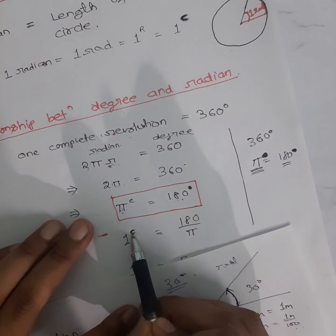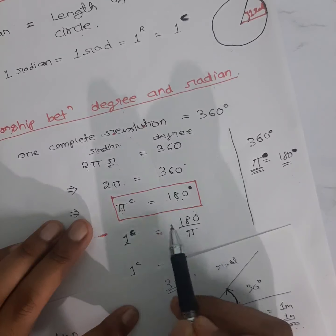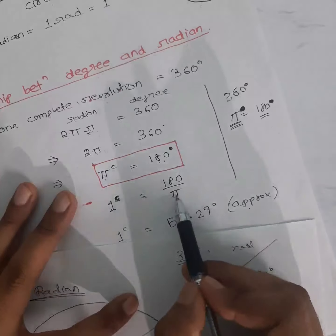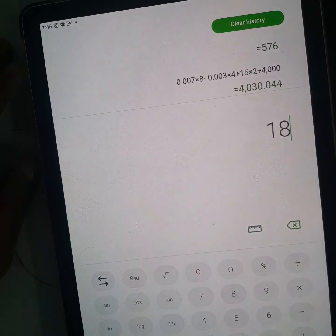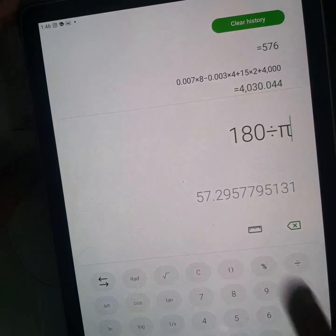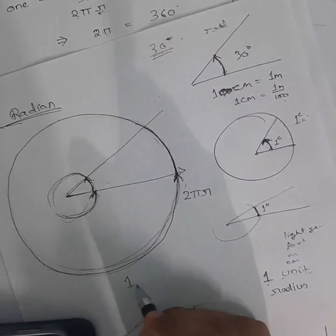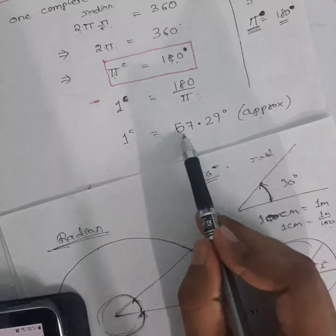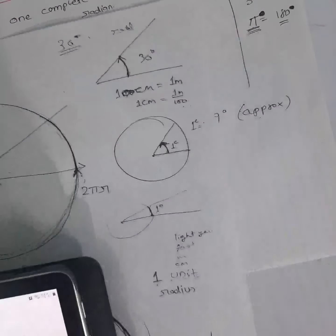Same way here also, I want to find out one radian is equal to how much. So what I will do — this pi I will bring to this side. What will be left out here? One radian. So one radian is equal to 180 by pi. Now you know the value of pi from lower class. If I put that value — 3.14 something — in the calculator, you can see 180 divided by pi gives 57.29577. This much degree you will get. That is the relation.